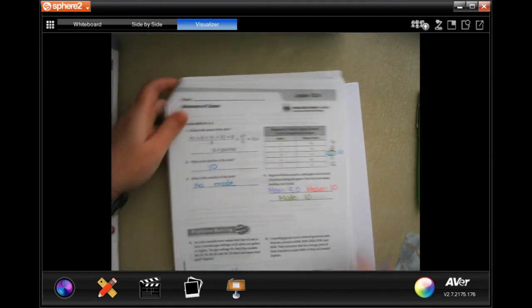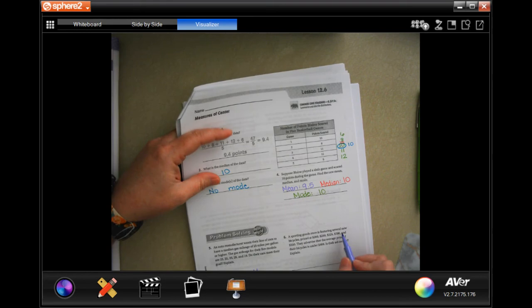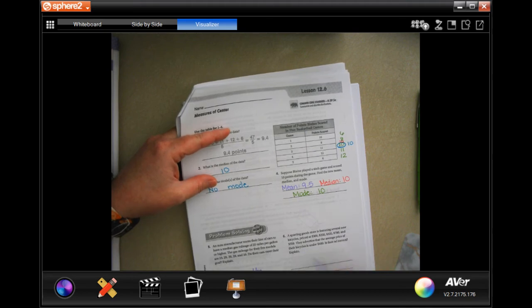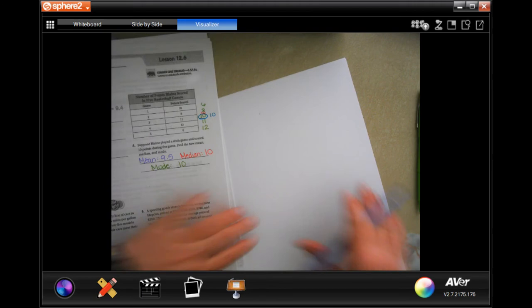Let me go ahead and get a new piece of paper. The sporting goods store is featuring several new bicycles priced at $300, $250, $325, $780, and $350. They advertise that the average price of their bicycles is under $400. Is their ad correct? Explain. So, now we do have to add them up and divide by the number of them.